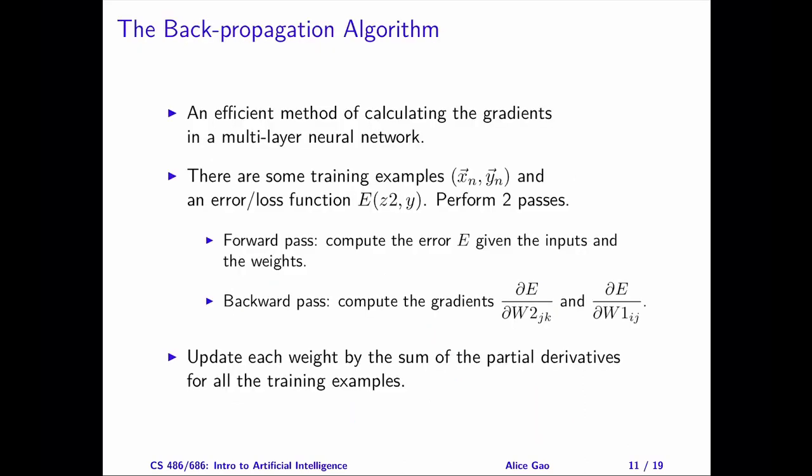Let's discuss the backpropagation algorithm. The most challenging step in the gradient descent algorithm is to calculate the gradient for each weight. We can write down an expression for the gradient for each weight and calculate it using that expression. Unfortunately, this approach is quite inefficient. Nowadays, neural networks tend to be quite large, and there could be thousands or more weights that we need to learn. The backpropagation algorithm is an efficient way of calculating the gradients for the weights.